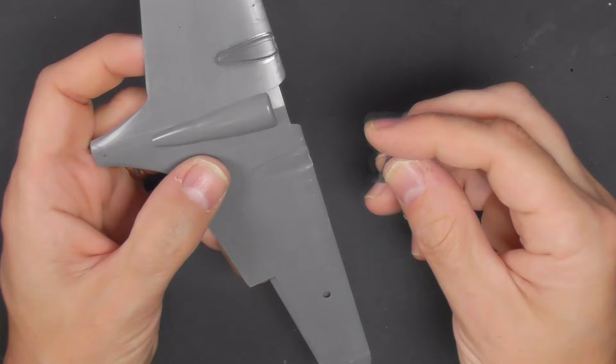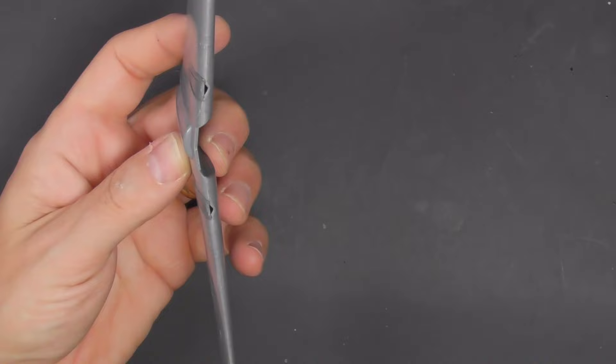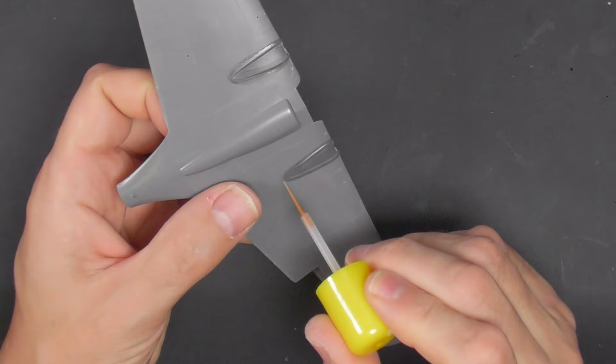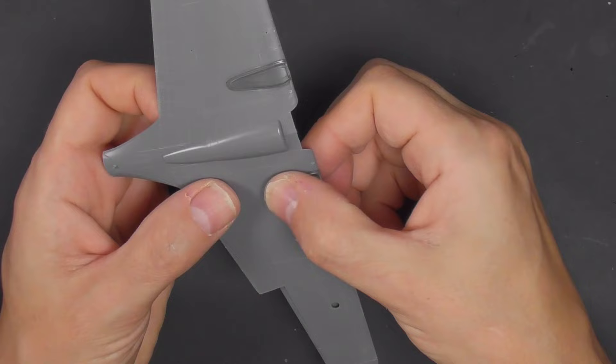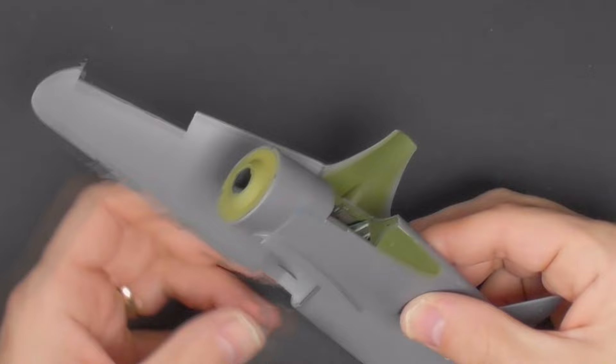These pieces, interestingly in a different colored gray plastic, are the mounting sockets, if you like, for the fixed undercarriage. It would be, I think, relatively easy for Clear Prop to mold retractable undercarriage and make a P-36, and I really hope they do that in the future.